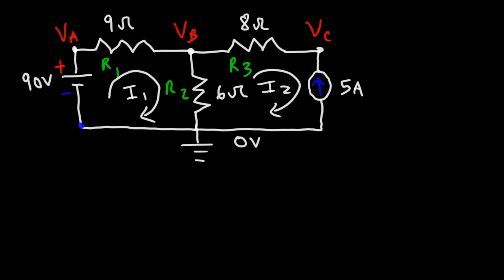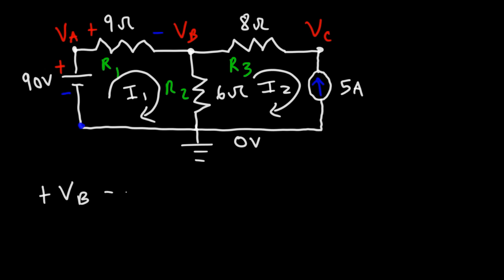Starting from this point, going around the first loop: as we travel through the battery, we're going from the negative terminal to the positive terminal, so that's a voltage rise — positive VB. Going through the resistor, current flows from a high potential to a low potential, so that's a voltage drop. Resistors are associated with a voltage drop because they consume energy, whereas a battery provides energy and is associated with a voltage rise.